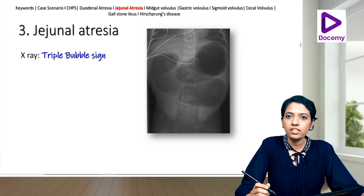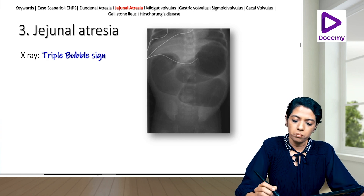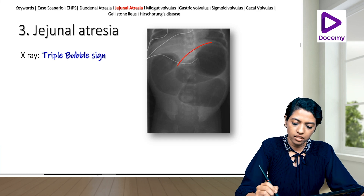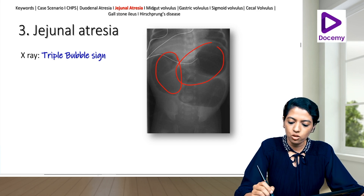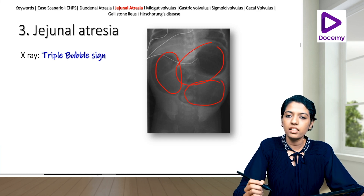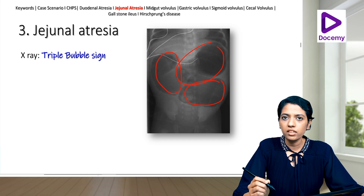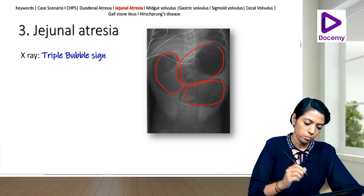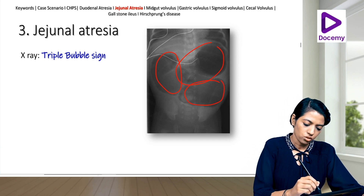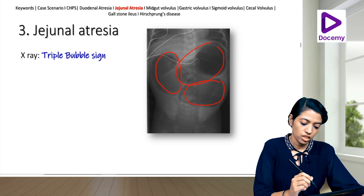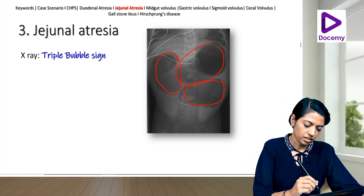Jejunal atresia shows a triple bubble sign — three bubbles. So to summarize: single bubble in CHPS, double bubble in duodenal atresia, and triple bubble in jejunal atresia.